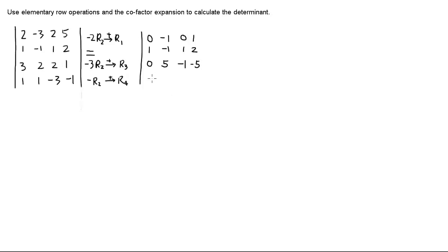We can see if we make even one error in calculation, we'll ruin the value of this determinant, so be very careful. One minus one is zero. One minus negative one is two. Negative three minus one is negative four. Negative one minus two is negative three. So this gives us five.